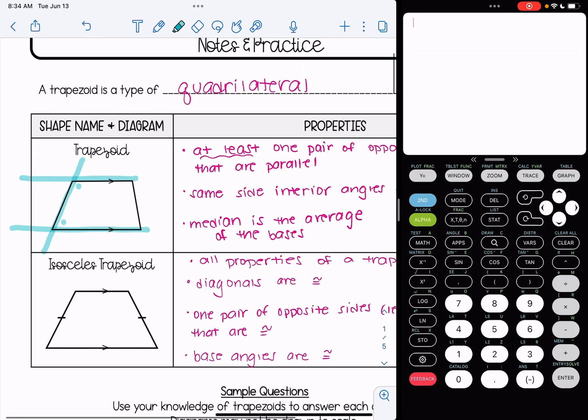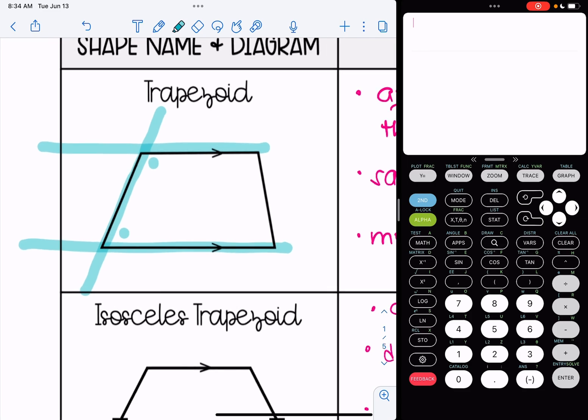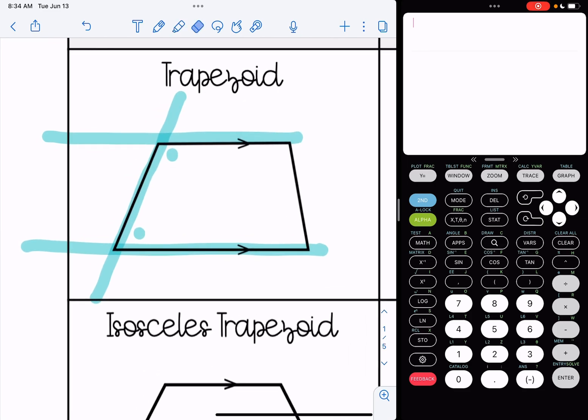Our last fact is that the median is the average of the bases. The median is also sometimes called the mid-segment of the trapezoid. So I'll draw here what that looks like. The median basically connects the mid-points of both sides of the legs of the trapezoid. And that's the average of the bases.